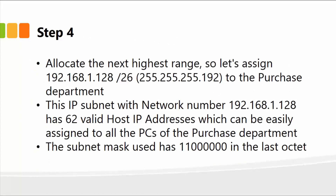Step four is simply allocating the next highest range. Once done with the sales department, the next department is purchase, which has about 50 computers. We will allocate the next set of IP addresses to the purchase department. This IP address with network number 192.168.1.128 has 62 valid host IP addresses, which can easily be assigned to all computers in the purchase department. The subnet mask used is 11 followed by seven zeros — you're just borrowing a bit, moving a bit order in the last octet.